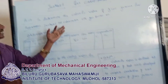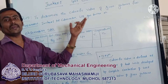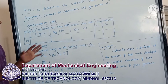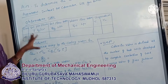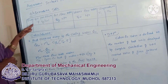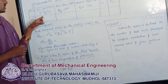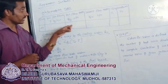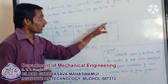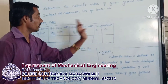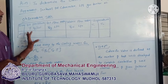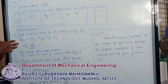Apparatus: Junkers calorimeter, LPG gas. The observation table includes: cylinder number, gas pressure, gas flow rate, water flow rate, temperature T1 and T2.